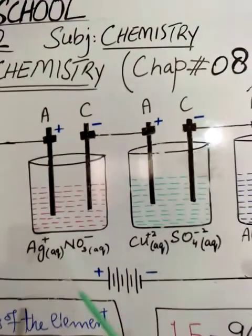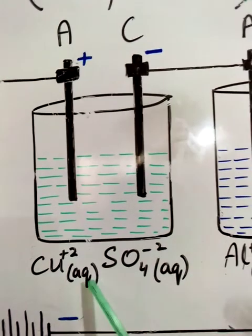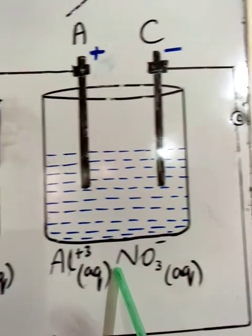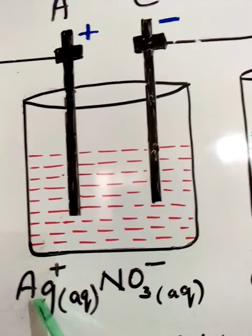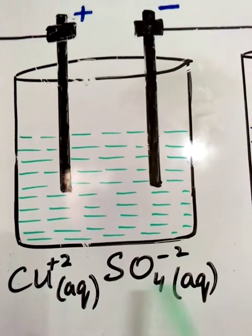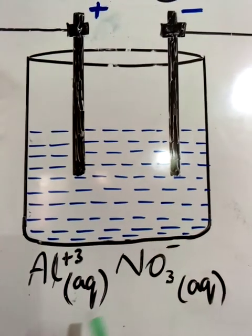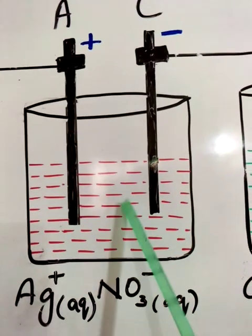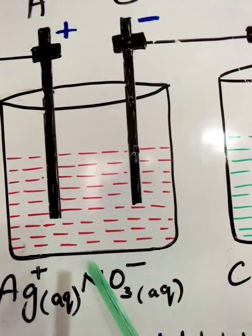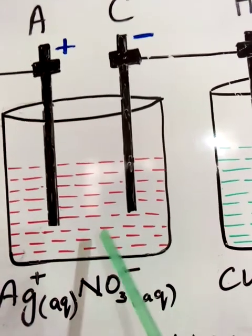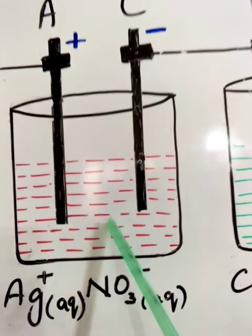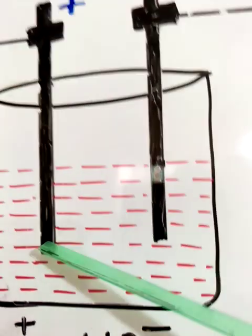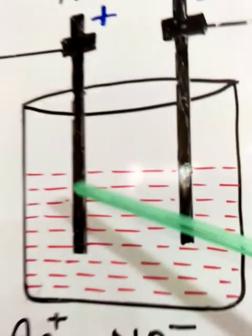In the first cell he put silver nitrate solution, in the second container he used copper sulfate solution, and in the third vessel he filled aluminium nitrate solution. Each solution is in aqueous form - when electricity is passed, the ionic compounds dissociate into their positive and negative ions and remain in aqueous form until they deposit at the respective poles in neutral solid state.